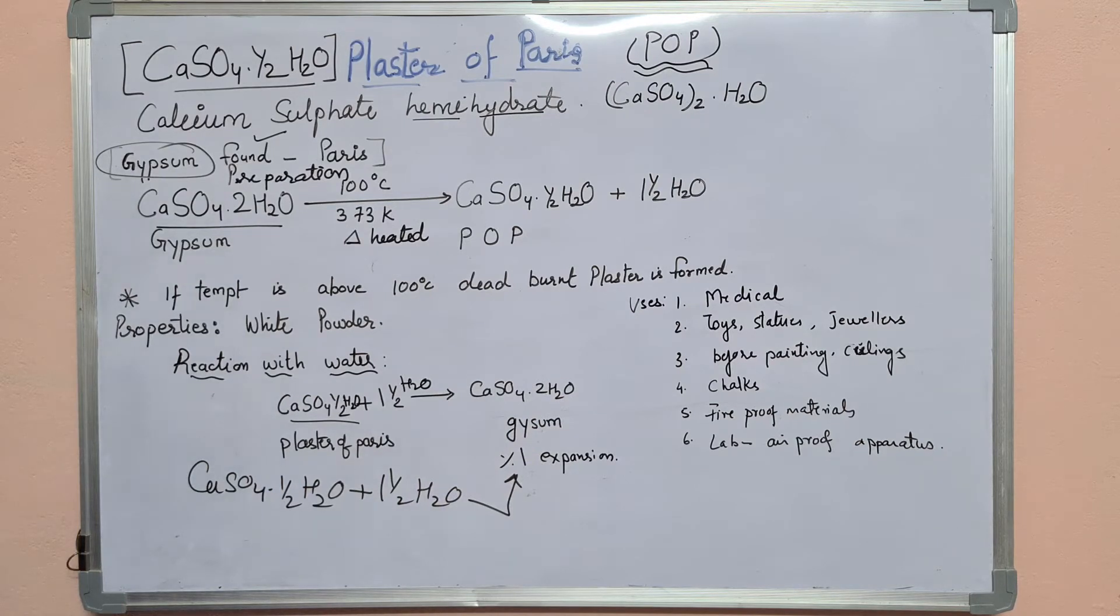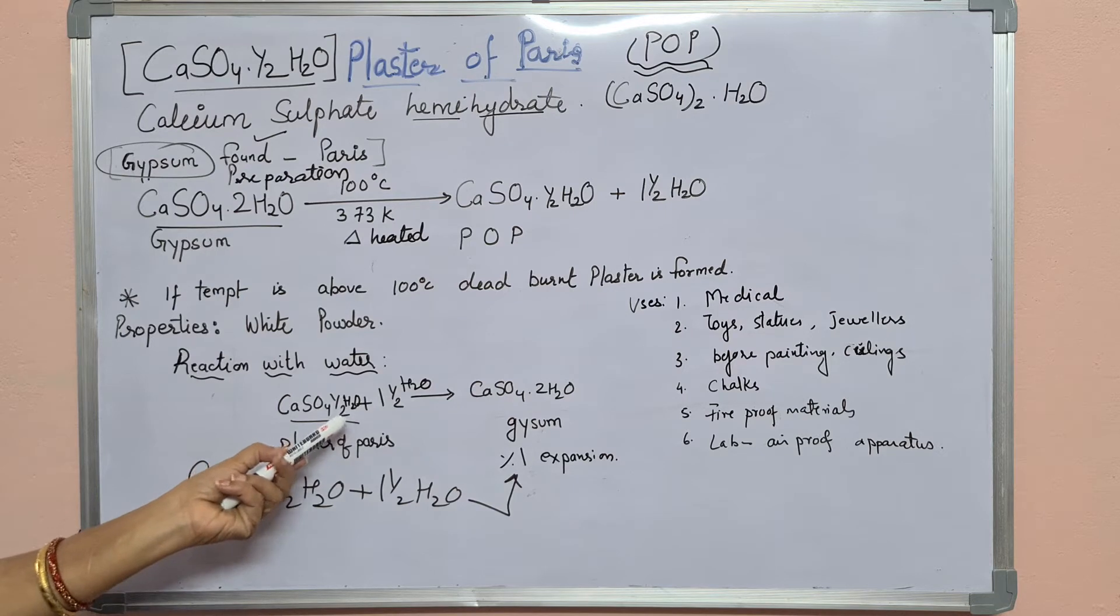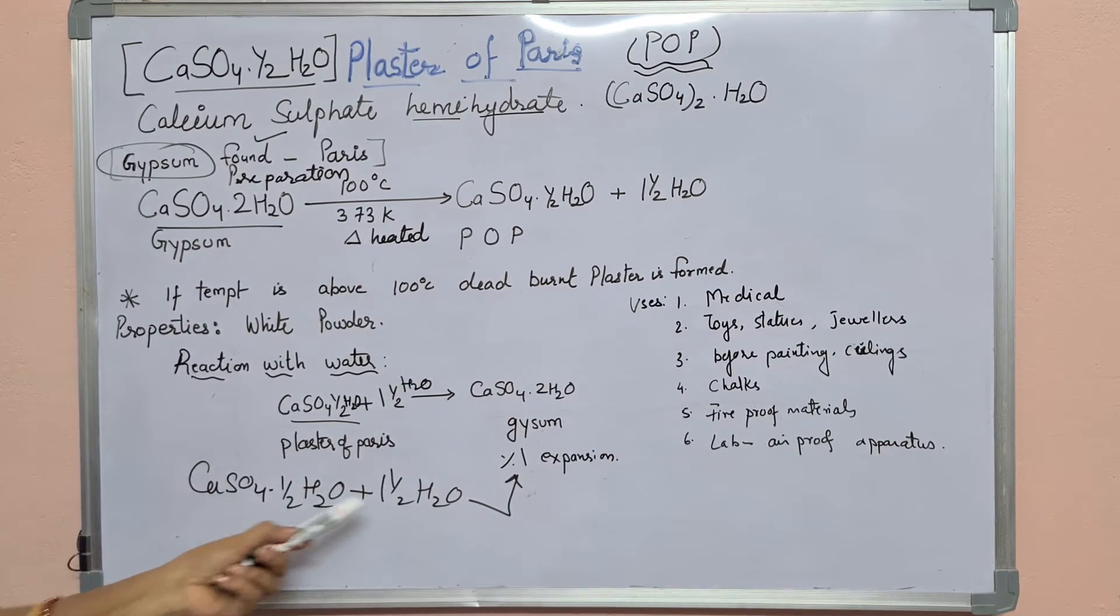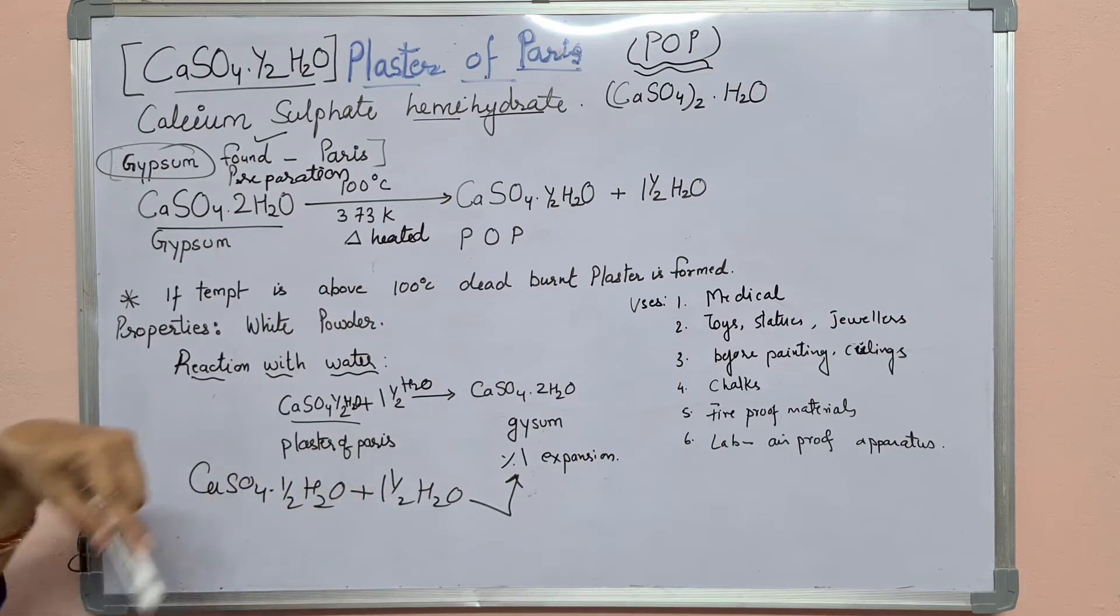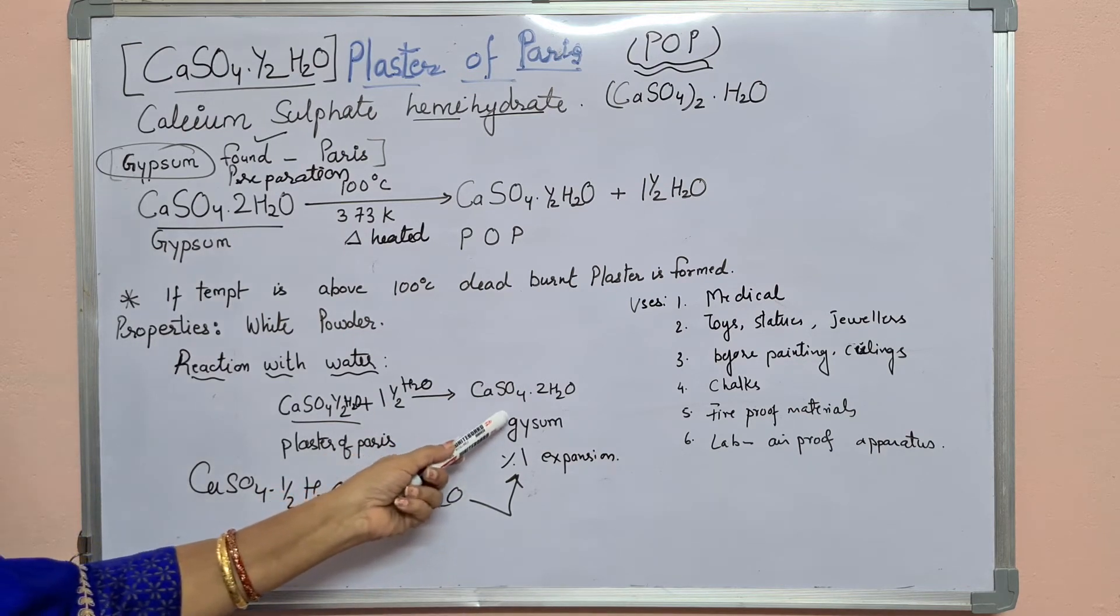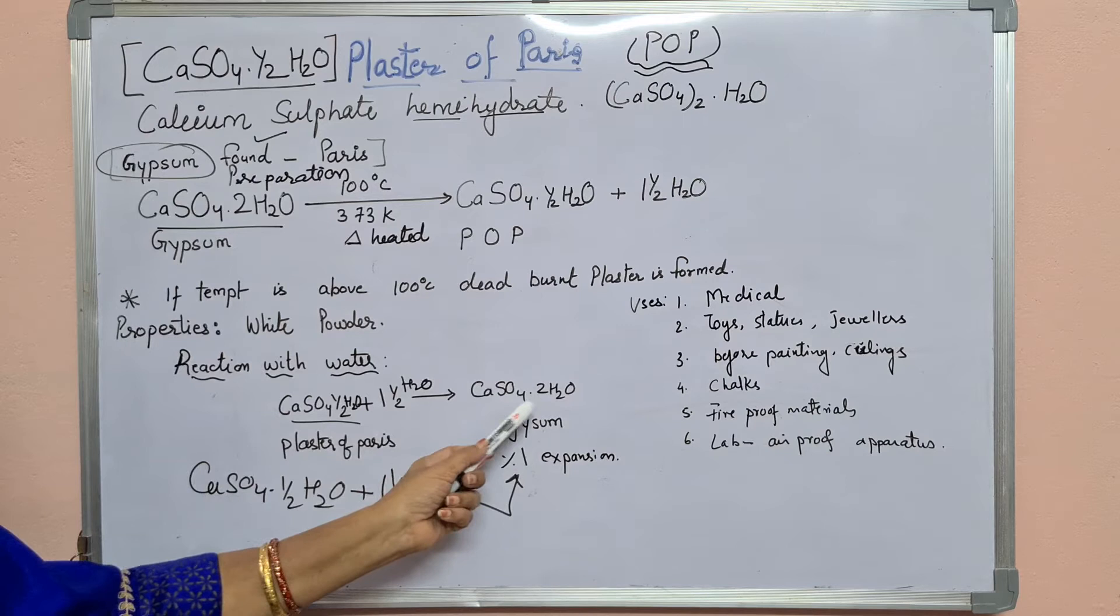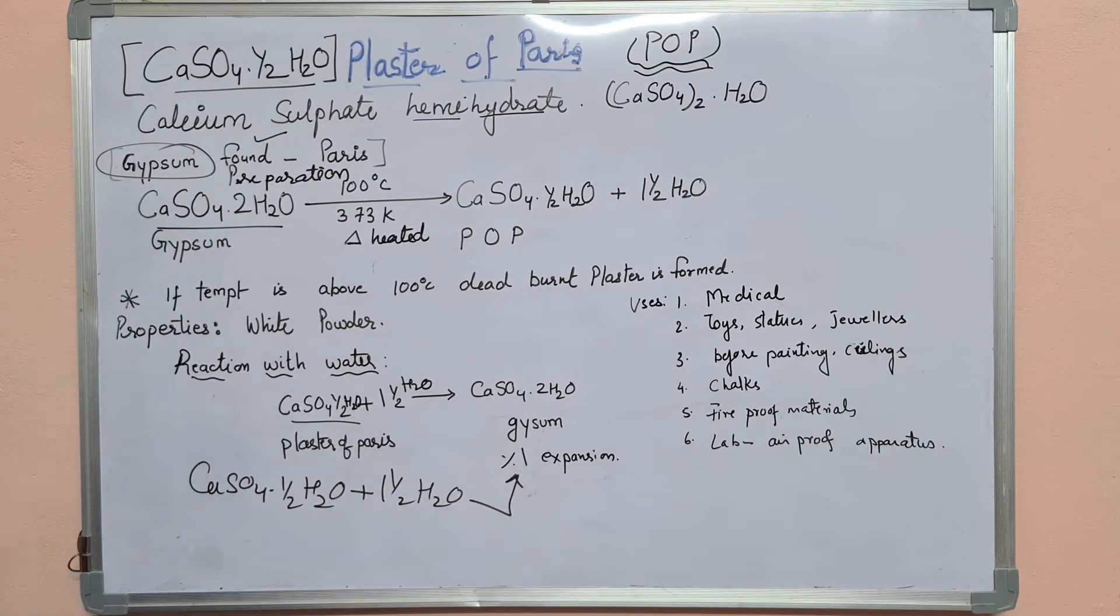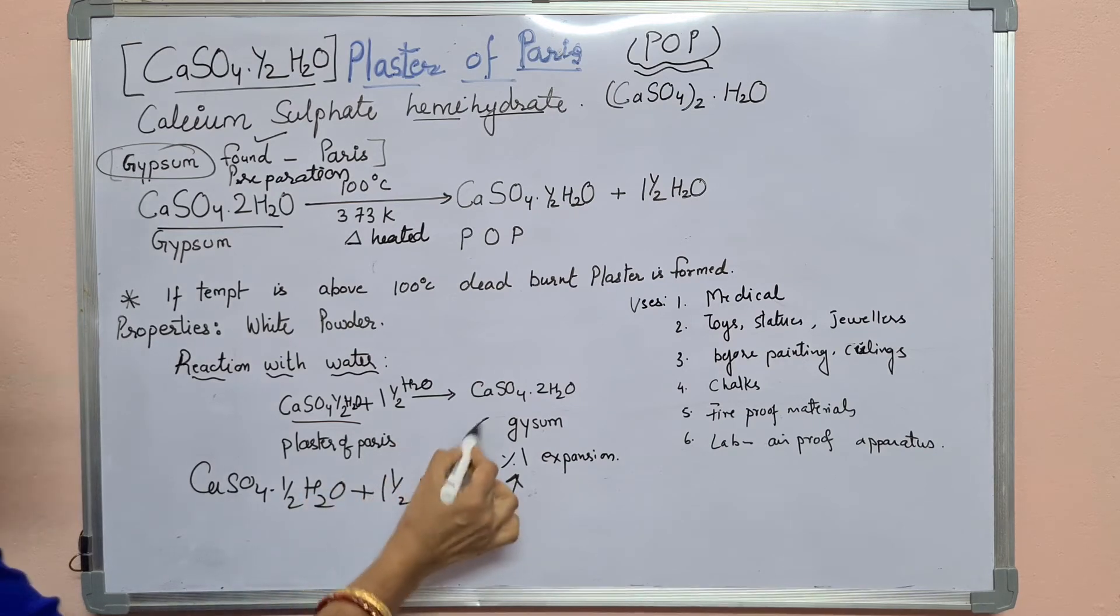When we mix water with plaster of Paris, after half an hour that plaster of Paris turns into hardened mass. This is the reaction - you add water to plaster of Paris, and in whichever mold you pour that slurry, decorative items or statues. After it hardens, the compound formed is gypsum, CaSO4·2H2O.